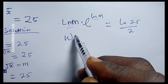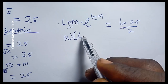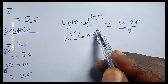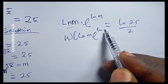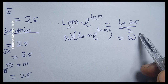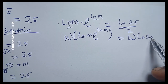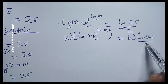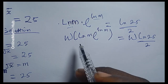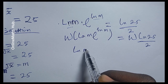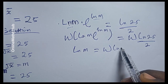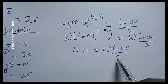Now I can apply the Lambert W function. I'll take the Lambert W of natural log of m multiplied by e to the natural log of m, equal to the Lambert W of the natural log of 25 divided by 2. The whole left-hand side collapses to: natural log of m equals the Lambert W of the natural log of 25 divided by 2.